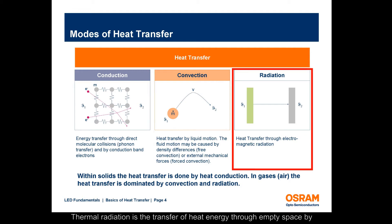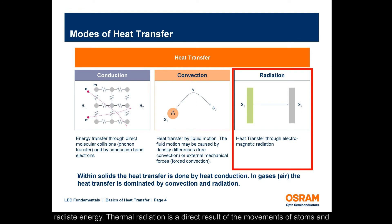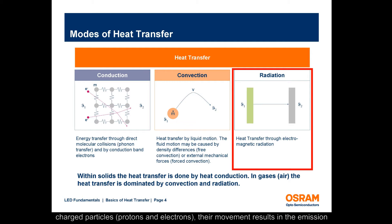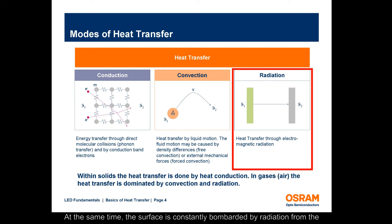Thermal radiation is the transfer of heat energy through empty space by electromagnetic waves. All objects with a temperature above absolute zero radiate energy. Thermal radiation is a direct result of the movements of atoms and molecules in a material. Since these atoms and molecules are composed of charged particles — protons and electrons — their movement results in the emission of electromagnetic radiation, which carries energy away from the surface. At the same time, the surface is constantly bombarded by radiation from the surroundings, resulting in the transfer of energy to the surface.